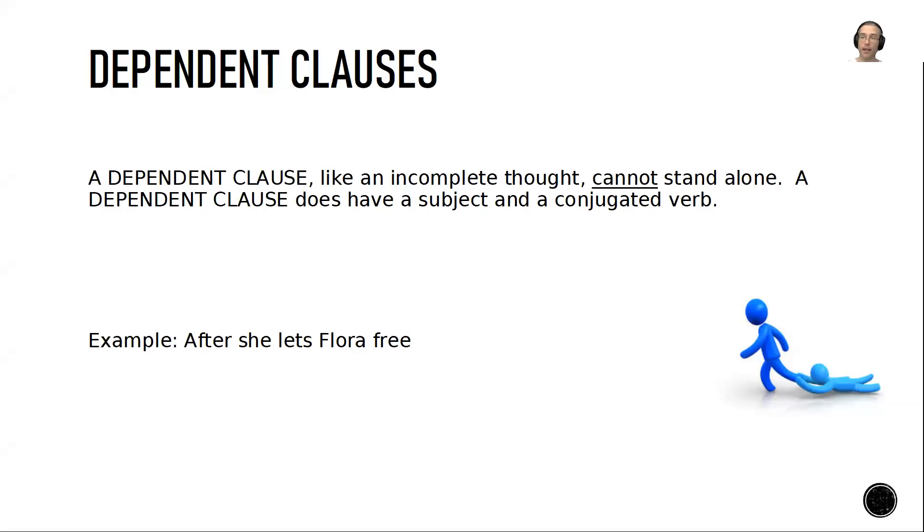'After she lets Flora free.' What happens after that? It's not a complete thought. The subordinated conjunction 'after' here turns this independent clause of 'she lets Flora free' into a dependent clause, and thus it can't stand alone. 'Before all the chips are gone.' What happens before all the chips are gone? Maybe before all the chips are gone, we have to go to the store.